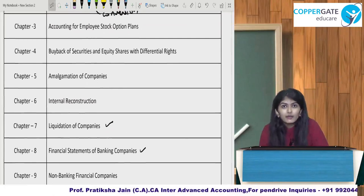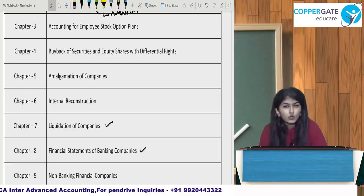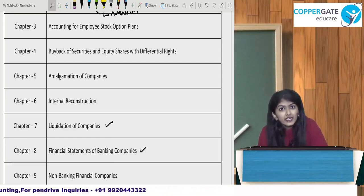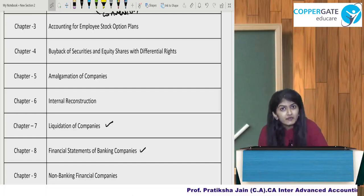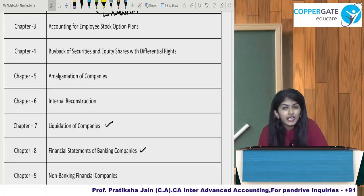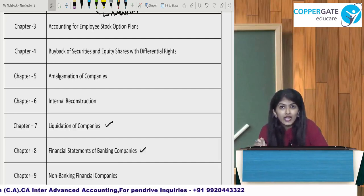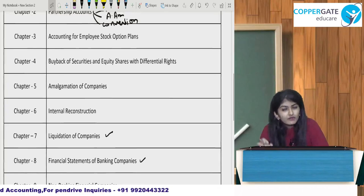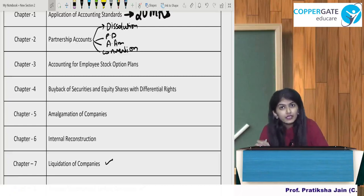Now friends, a question that might come to your mind is: what is the difference between Paper 1, that is Accounting, and Paper 5, that is Advanced Accounting? Paper 1 deals with accounting on generalized terms, while Paper 5 Advanced Accounting covers advanced level accounting for specific entities. For example, banking companies are a specific entity — which act applies to them, how their accounting is done, how their profit and loss account is made, how their balance sheet is prepared. Similarly, if companies are amalgamating, what will be the treatment — advanced accounting talks about all these specific entities. Partnership accounts is a specific entity — its accounting, agreement, and books of accounts are all discussed here.